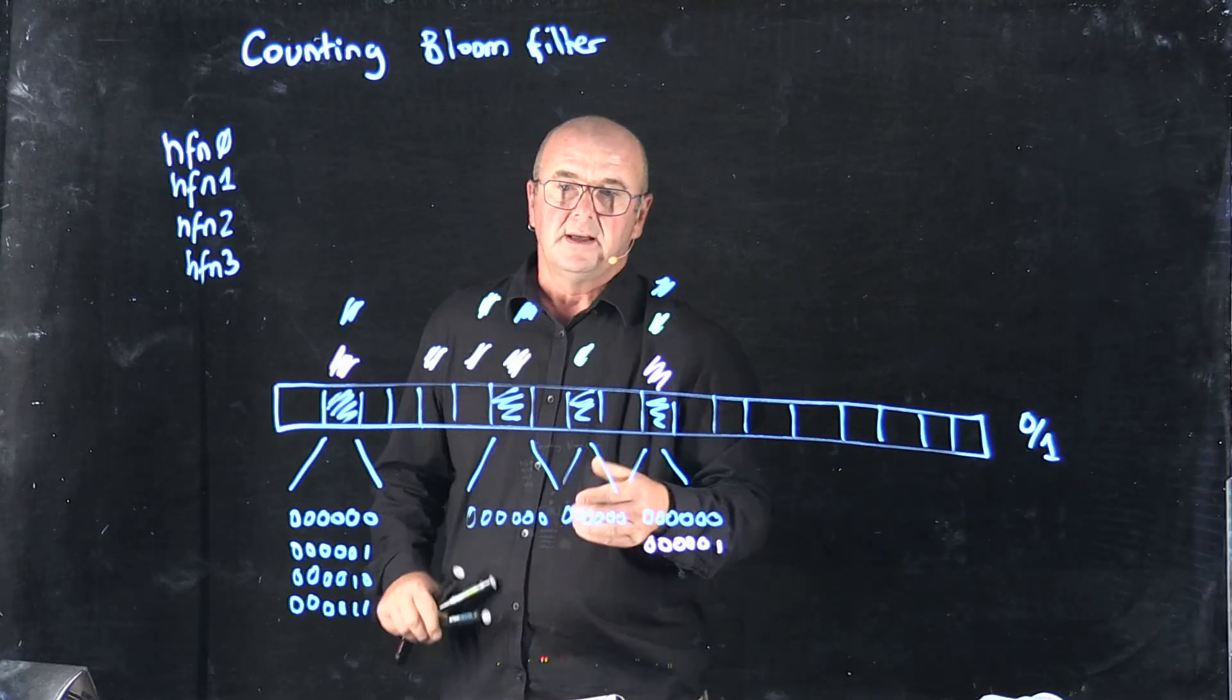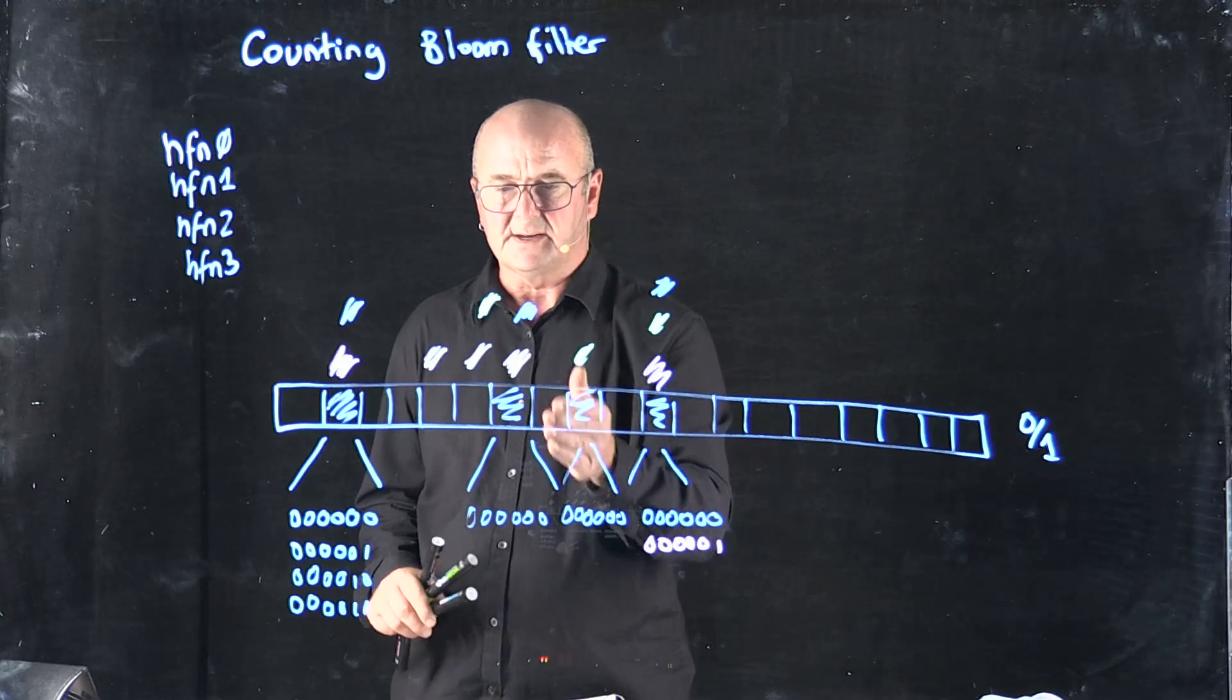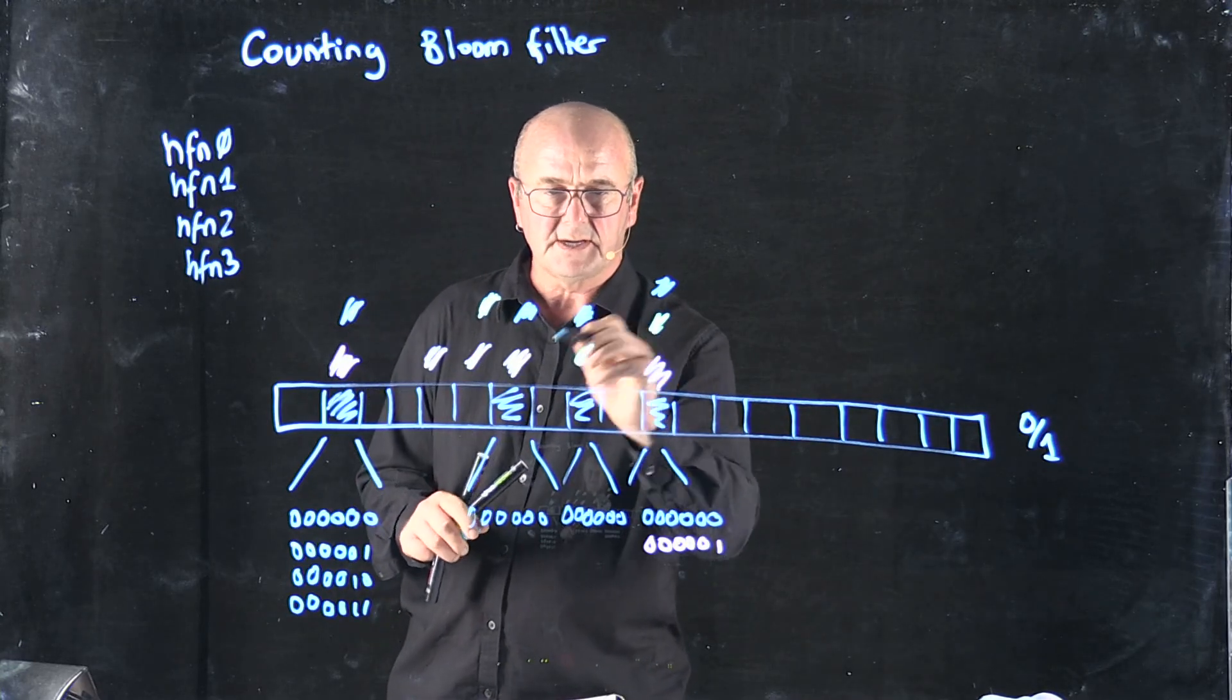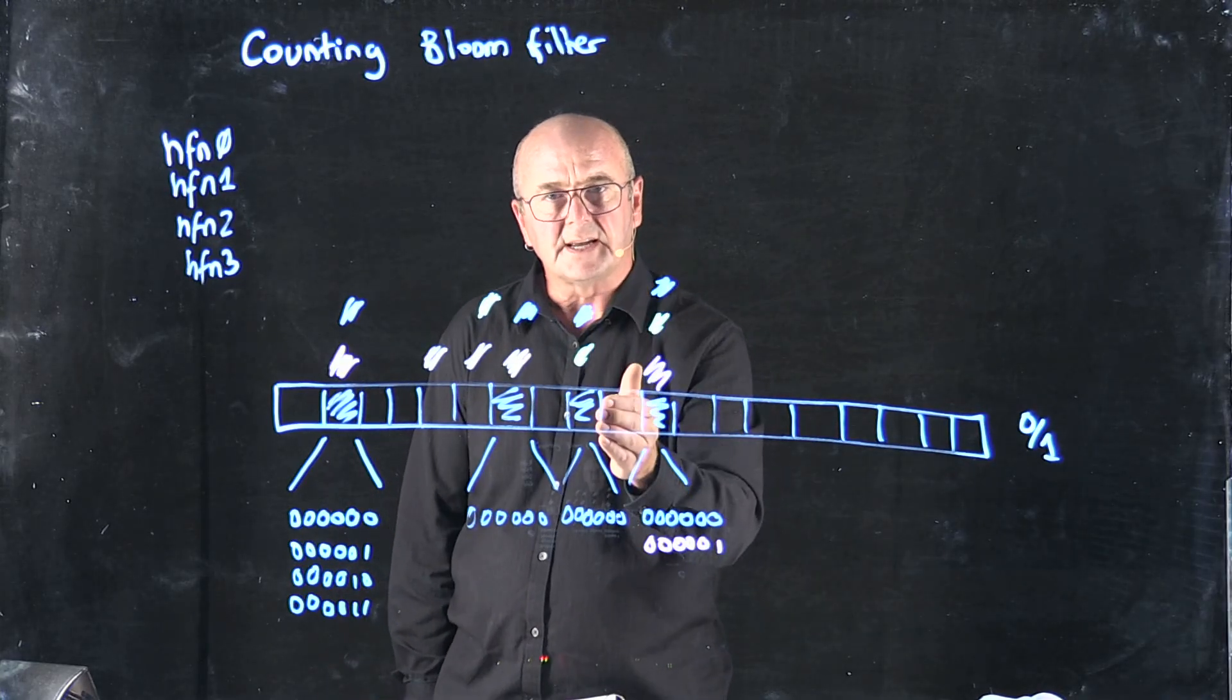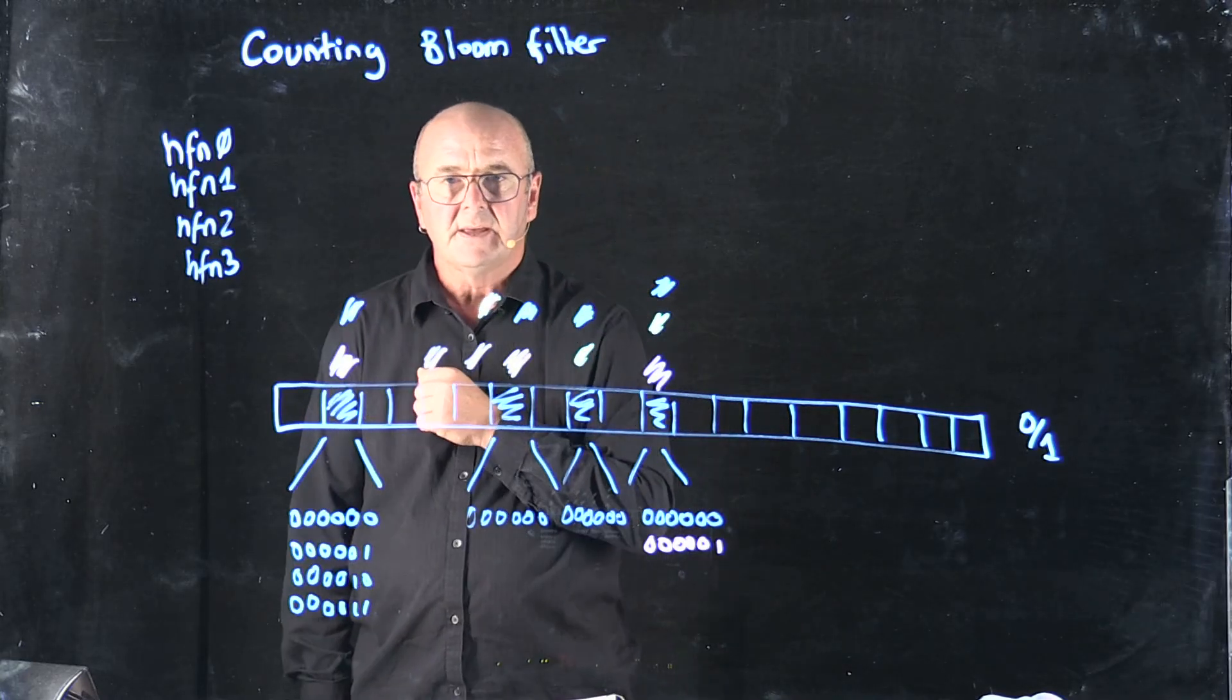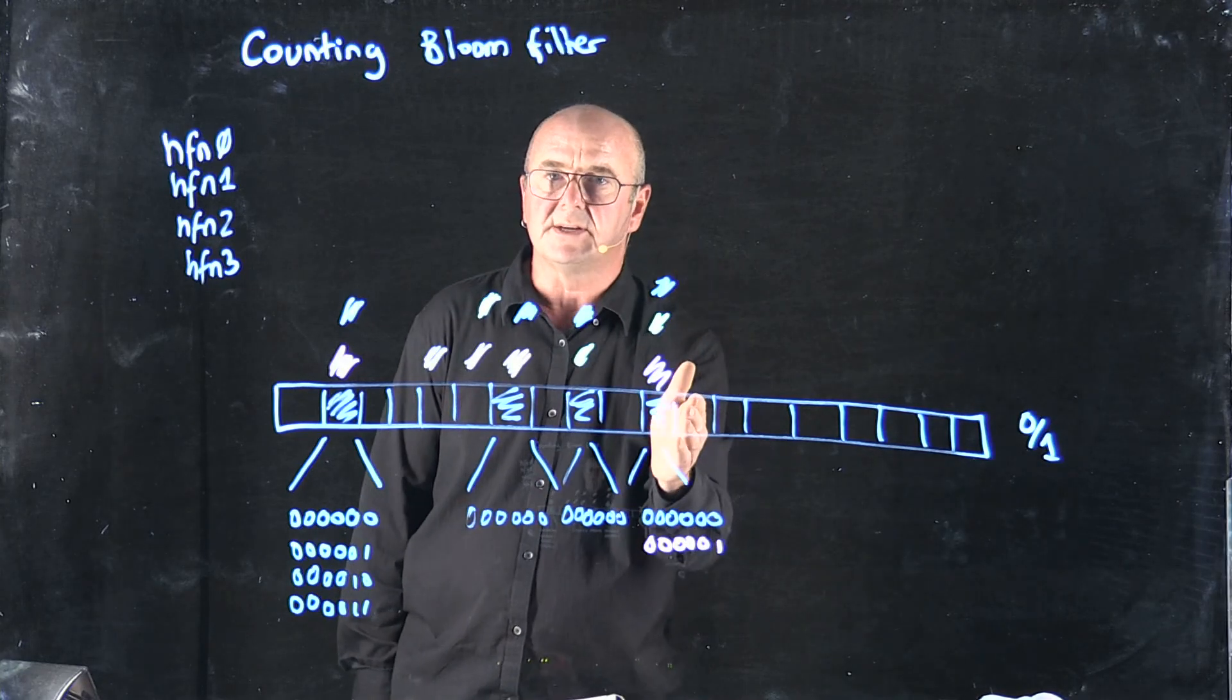So here I say I've seen something four times, here I say I've seen it three times, here I say it three times, and here I've seen it three times. None of those answers are right because I've only seen the blue sequence twice.